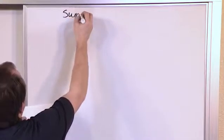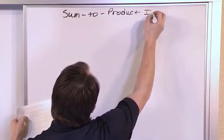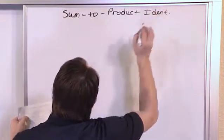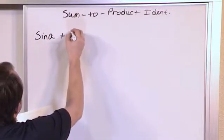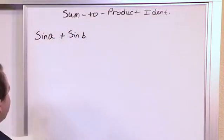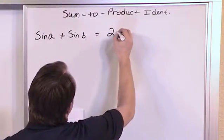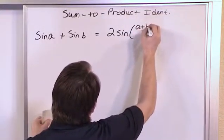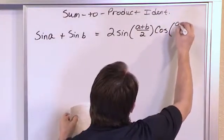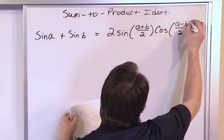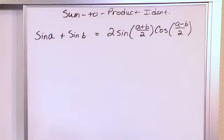So here we have sum to product identities like this. If we have sine of some angle A plus sine of some angle B, which is very common to have two sines of two different angles sum together, you can rewrite that as 2 times the sine of A plus B over 2, the angles A plus B over 2, times the cosine of A minus B over 2. So again, you're going from sum to the product of two trig functions.